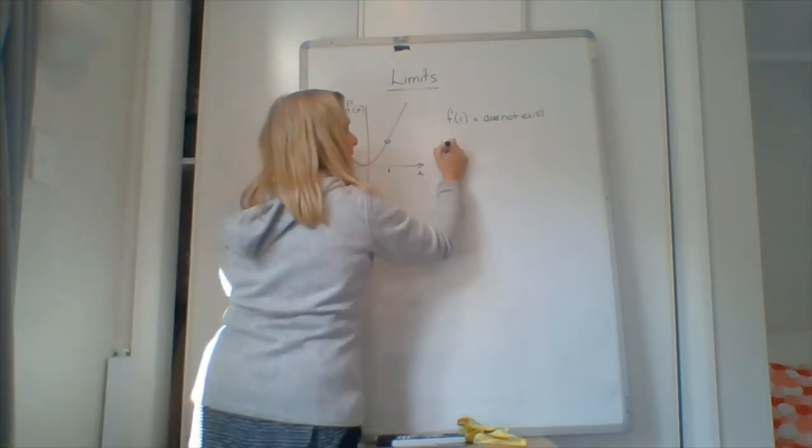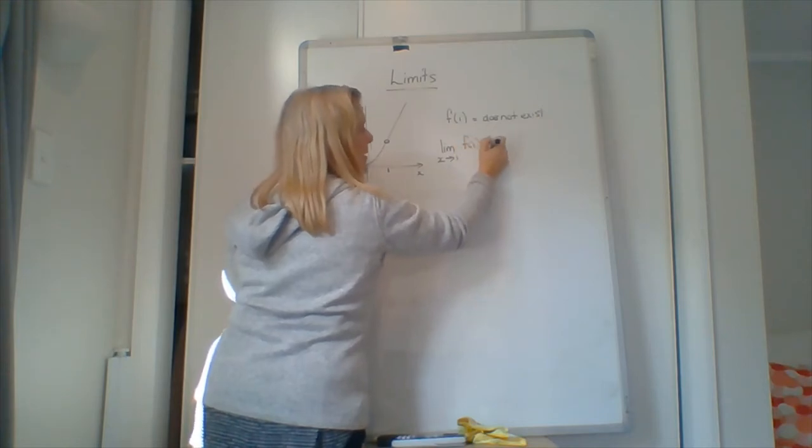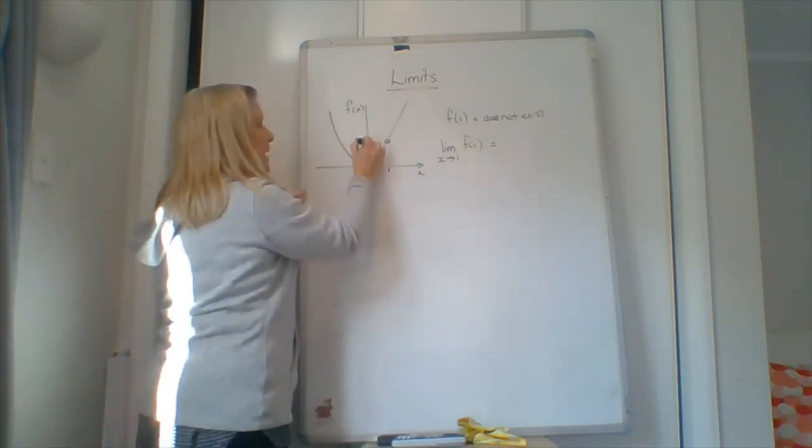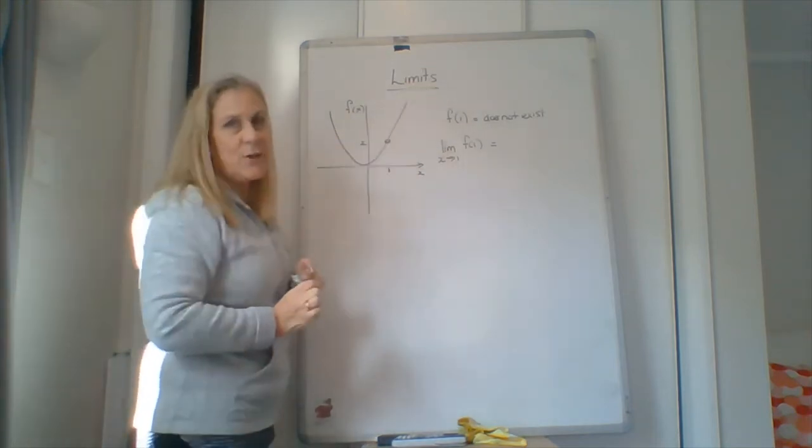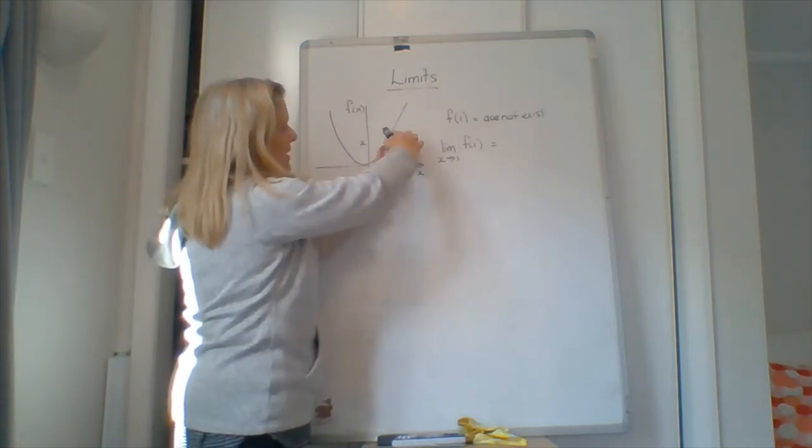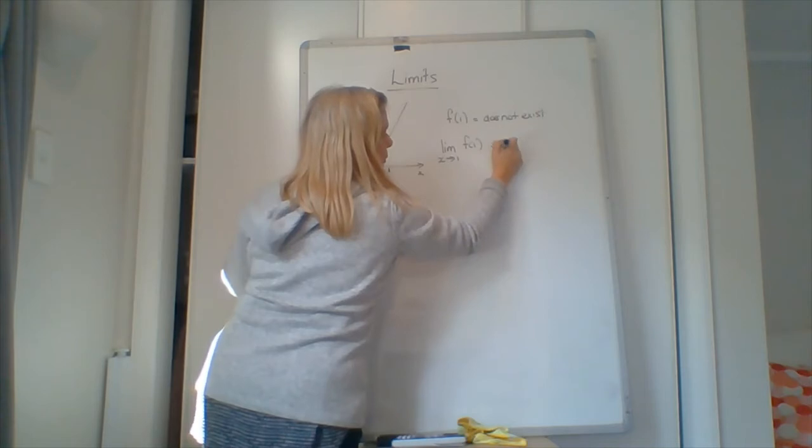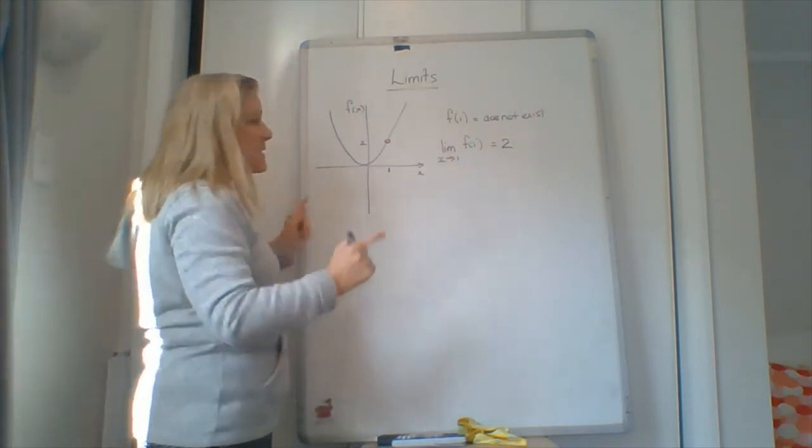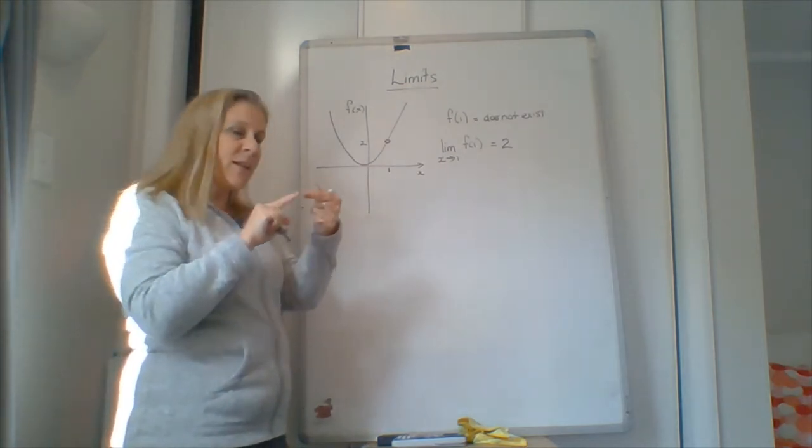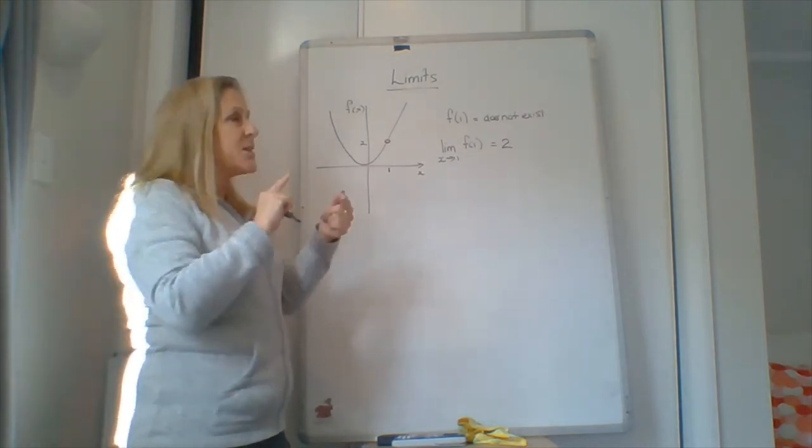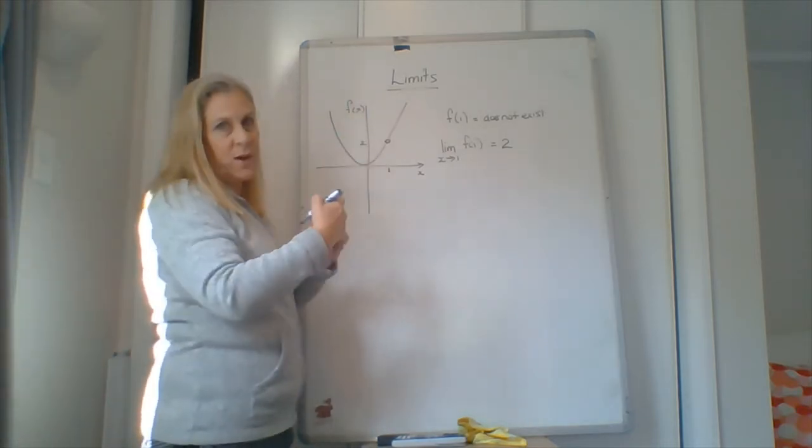But the limit as x approaches 1 of f of 1 is what? So it looks like, let's put 2 on here, it looks like as we approach this value, so coming from both sides, our fingers are going to meet at 2. That makes the limit 2. So it's important to use your fingers, travel like a train, where is the train going to crash? If the train doesn't crash, then there isn't a limit. So you must be able to have your fingers crashing.